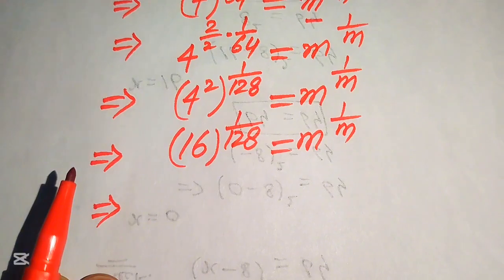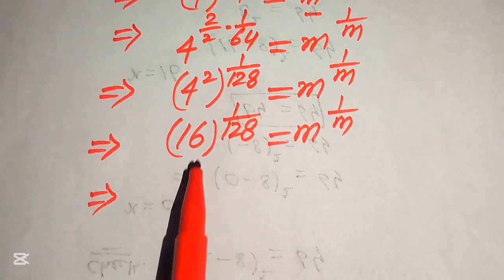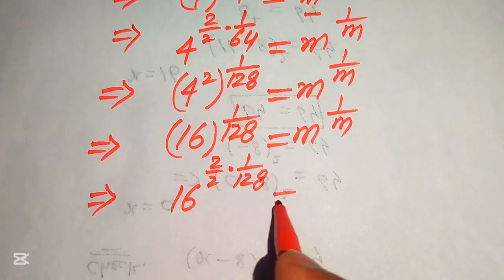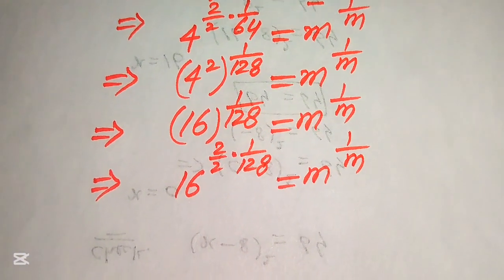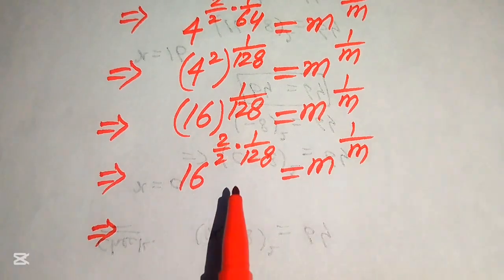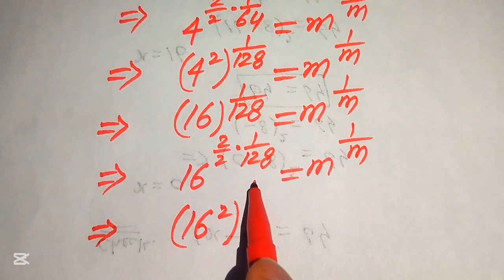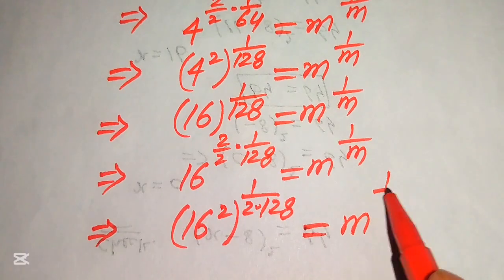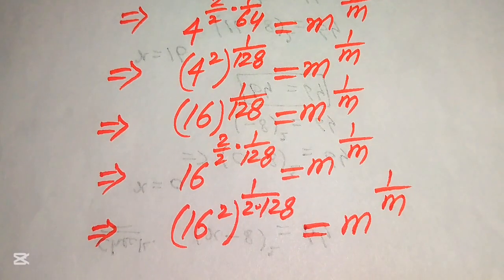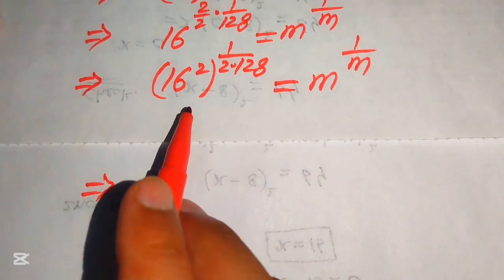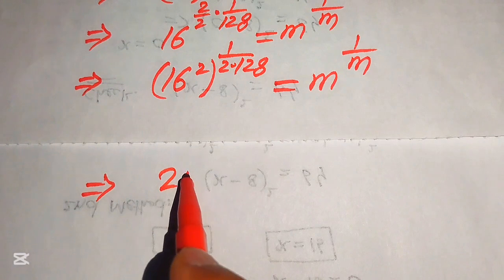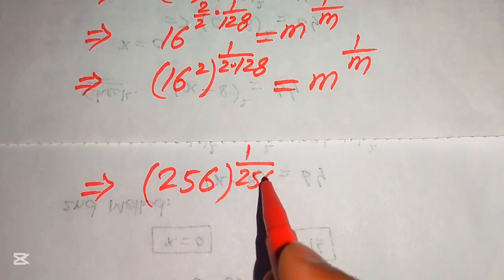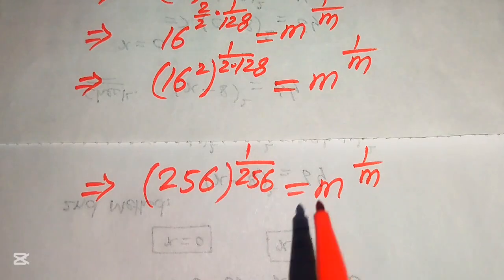We repeat the process again, multiplying and dividing the exponent of 16 by 2: 16 to the power of 2 over 2 multiplied by 1 over 128. Moving the 2 inside gives 16 squared, and 2 times 128 equals 256. So we get 256 to the power of 1 over 256, equals m to the power of 1 over m.